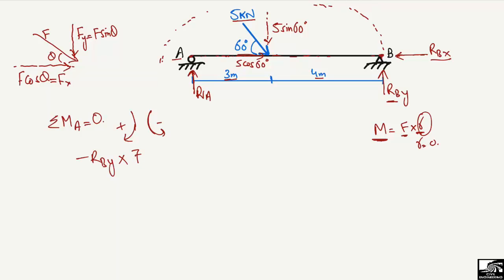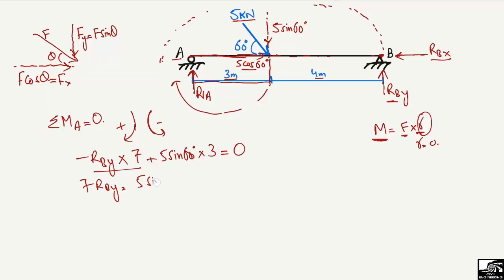The only other load that creates a moment about point A is 5·sin(60°), because it acts perpendicular to the beam. It creates a moment in the clockwise direction, so it is positive: +5·sin(60°) × 3. The 5·cos(60°) component acts along the axis of the beam, so its moment arm is zero and it creates no moment. Setting the summation of moments equal to zero: −R_BY × 7 + 5·sin(60°) × 3 = 0.